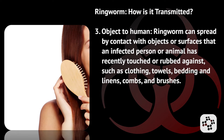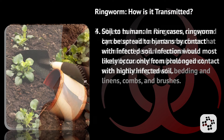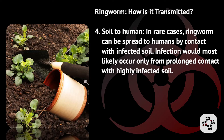Object-to-human: ringworm can spread by contact with objects or surfaces that an infected person or animal has recently touched or rubbed against, such as clothing, towels, bedding, linens, combs, and brushes. Soil-to-human: in rare cases, ringworm can be spread to humans by contact with infected soil. Infection would most likely occur only from prolonged contact with highly infected soil.